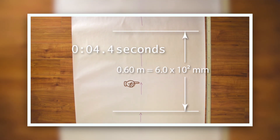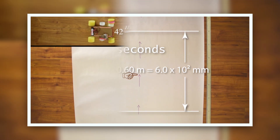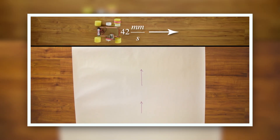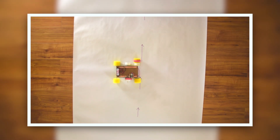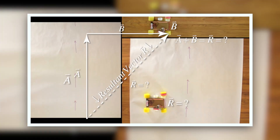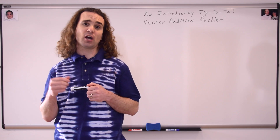Good morning. Today we are going to increase our knowledge of tip-to-tail vector addition by slightly altering our example involving a moving track at our slow velocity racer.